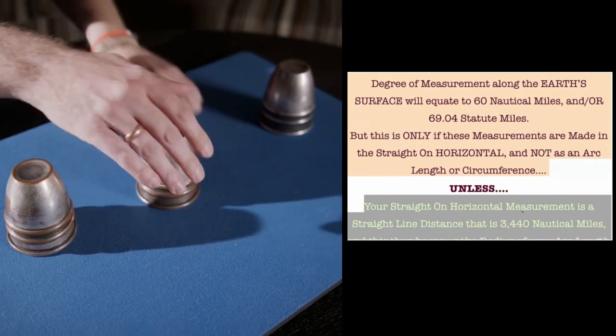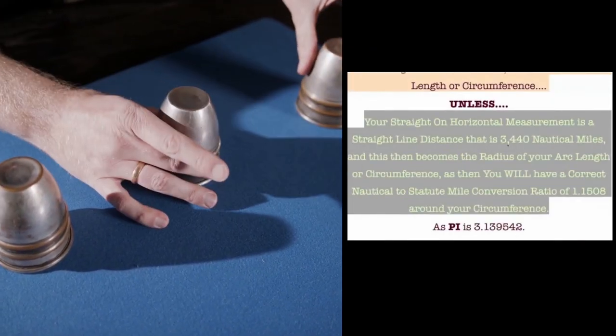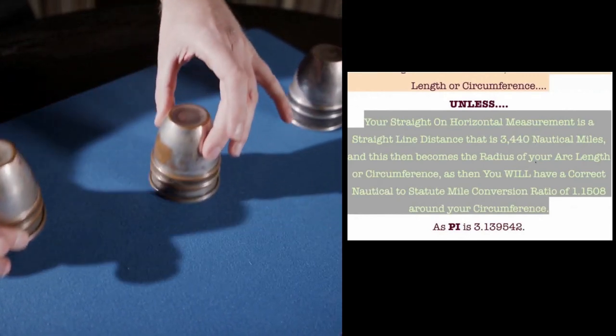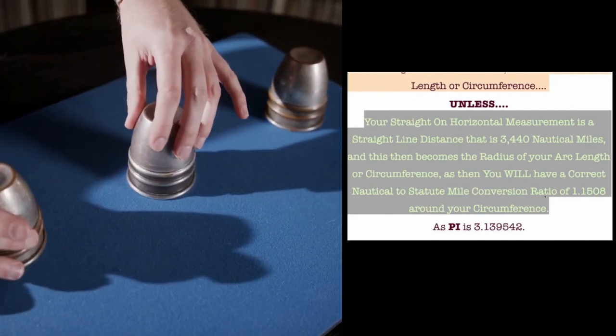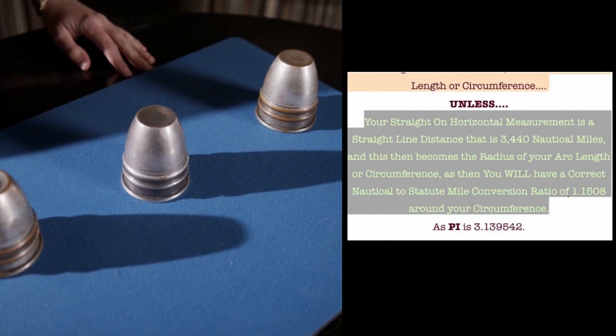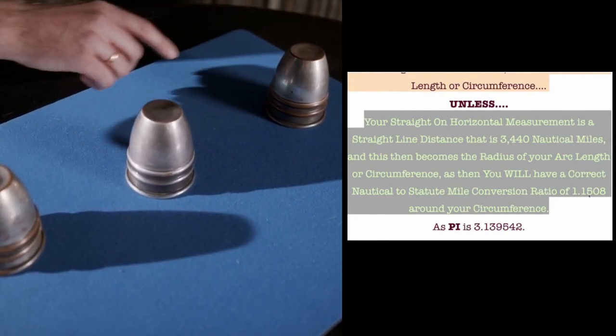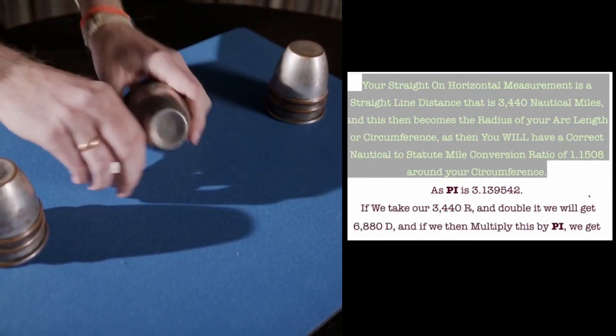Unless your straight on horizontal measurement is a straight line distance that is 3440 nautical miles, and this then becomes the radius of your arc length or circumference. And then you will have a correct nautical to statute miles conversion ratio of 1.1508 around your circumference as pi is 3.139542. That's pi more or less.